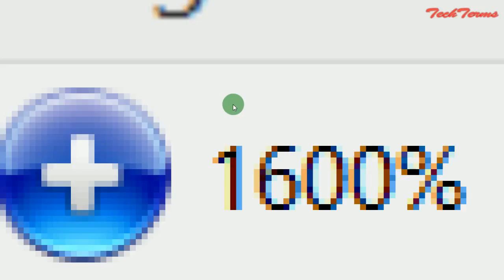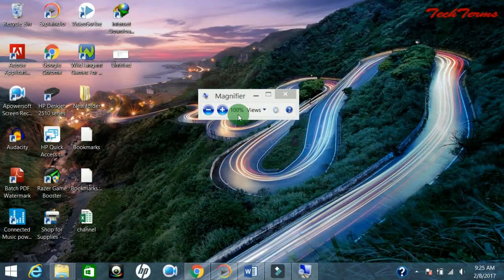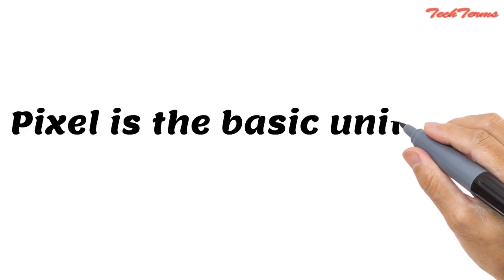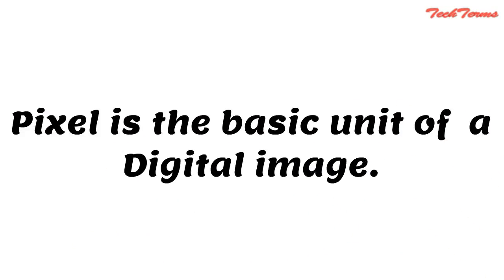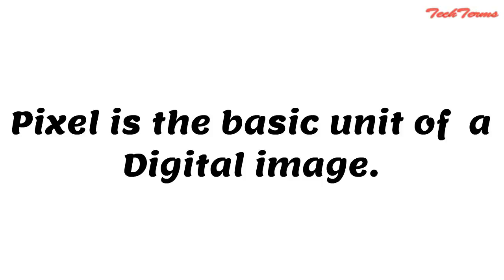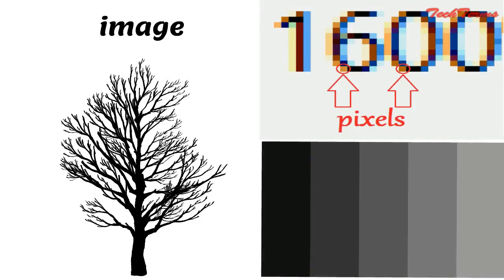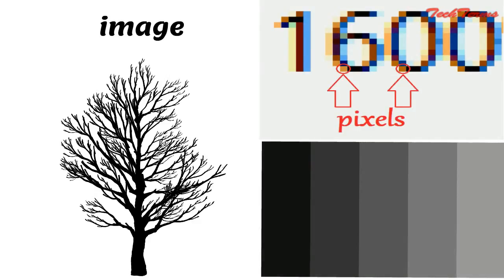These small squares are called pixels, and these pixels combine to form the whole image. So a pixel is the basic unit of a digital image. In a black and white image, these pixels contain different shades of gray color only.